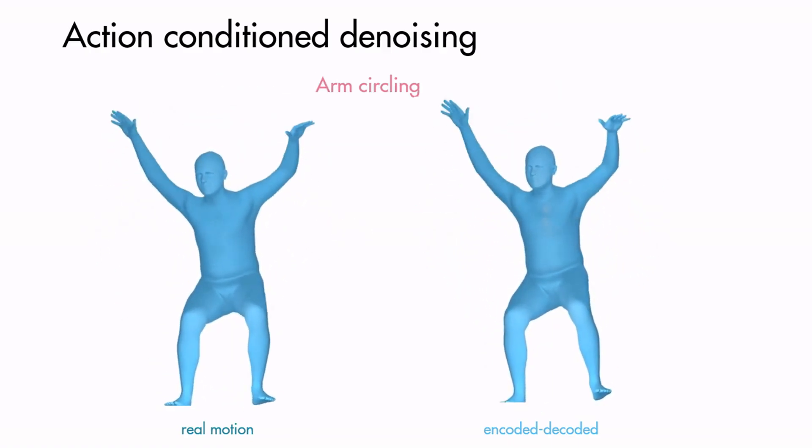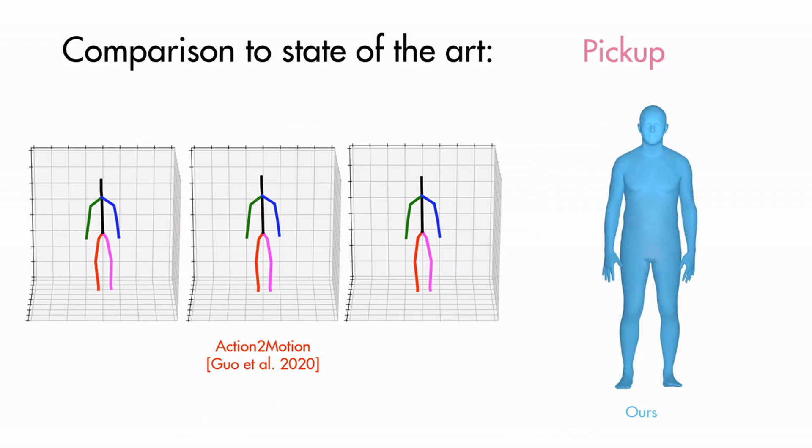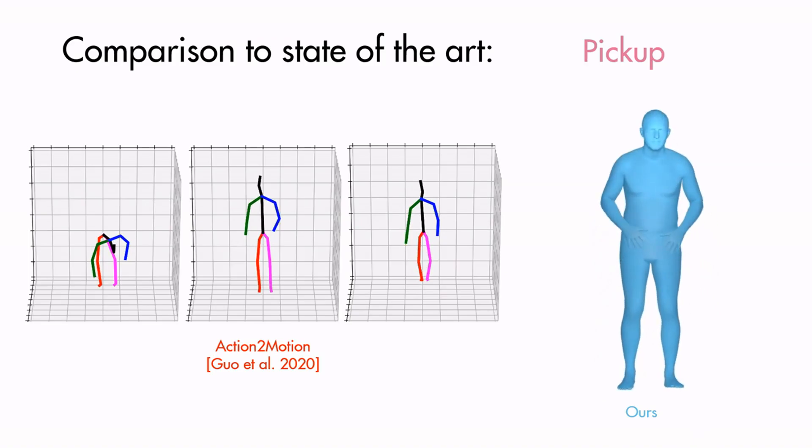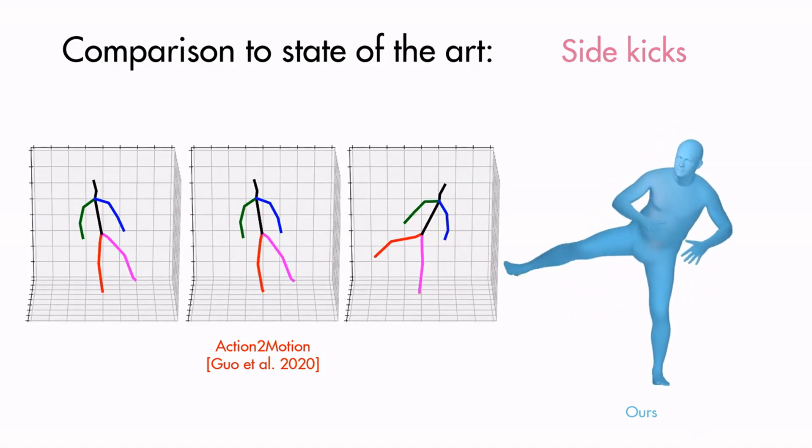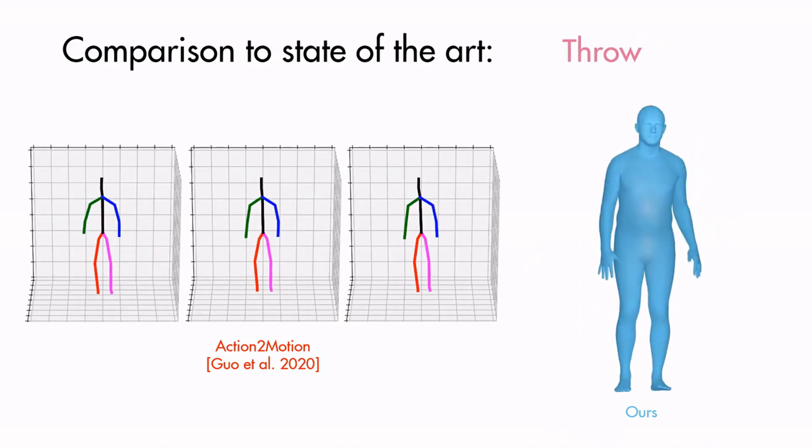We qualitatively compare random generations from our model and from action-to-motion, the state of the art in this task. Our generations have significantly less jitter. Moreover, action-to-motion requires an optimization step to fit SMPL meshes on skeletons, whereas our generator directly outputs SMPL parameters.